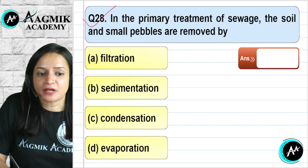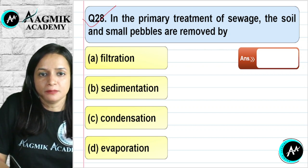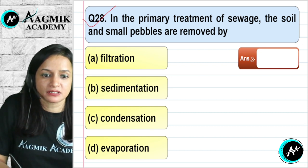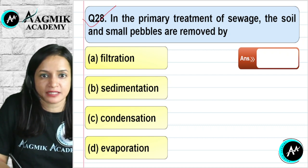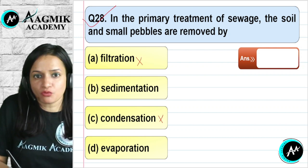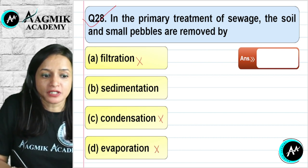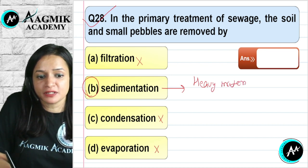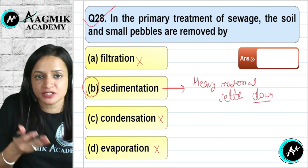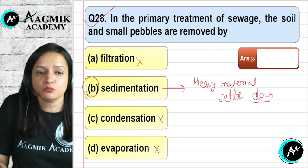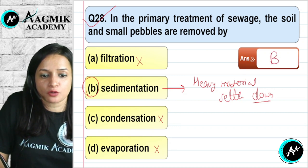Question number 28: In the primary treatment of sewage, soil and small pebbles are removed by which process? Filtration cannot guarantee removal of fine soil particles through wire mesh. Condensation involves loss of water molecules. Evaporation is not the right answer. The correct process is sedimentation — heavy materials settle to the bottom, leaving cleaner liquid above. The correct option is B.